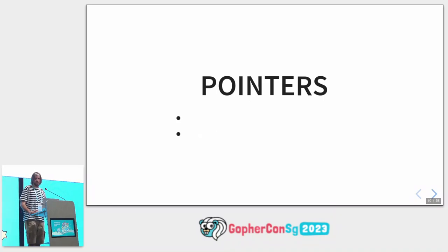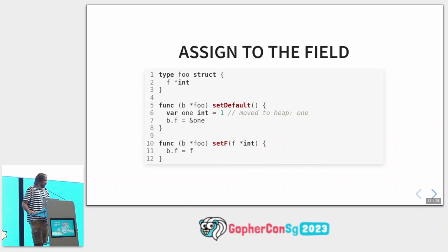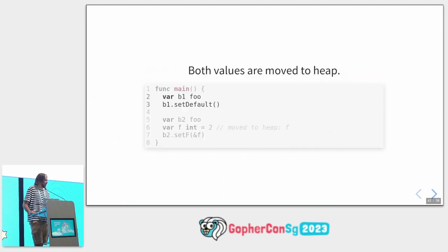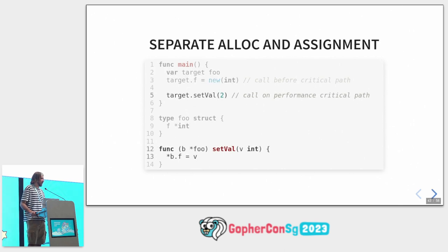So the next topic is about pointers. There are two main problems with pointers: if you assign a pointer to a field of a structure, and if you return it from a function. So if you assign it to a field like this, you have two methods — one takes the value from the local scope of the function, and another takes it from outside. In both cases there will be heap allocation, just because the compiler cannot prove that this pointer will not be used after the function. Because it's a structure field.